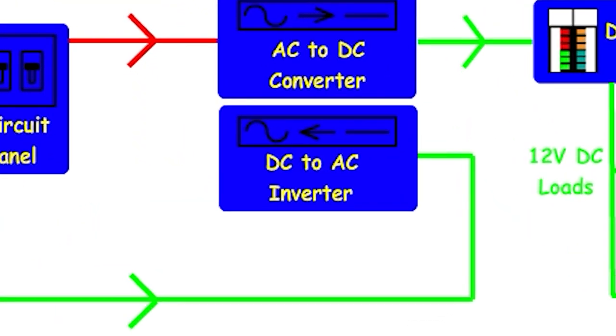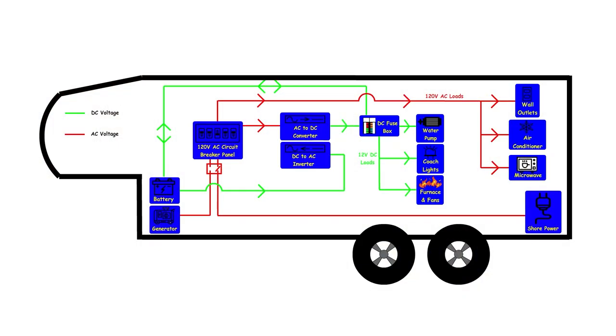The last component to look at is a DC-to-AC inverter. It's similar to the AC-to-DC converter but does the opposite job — it takes DC battery power, inverts it, and turns it into AC power. Not all rigs will have one of these. It takes battery power, converts it from DC to AC, and sends that power right back into the 120-volt AC distribution box to be used as a normal AC source.